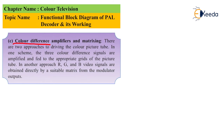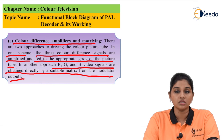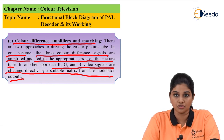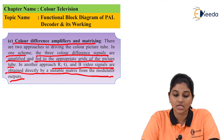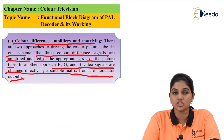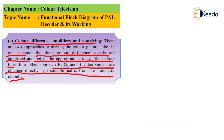The next block is the color difference amplifier and matrix. There are two approaches to separate color signals: in the first method, the three color difference signals are amplified and given to the proper grid of the picture tube. In the second method, RGB video signals are obtained directly using a suitable matrix from the demodulator output. In the block diagram of the PAL decoder, a matrix is used — meaning the second method is employed for obtaining color information, with actual color separation taking place using either a matrix or proper grid circuits.